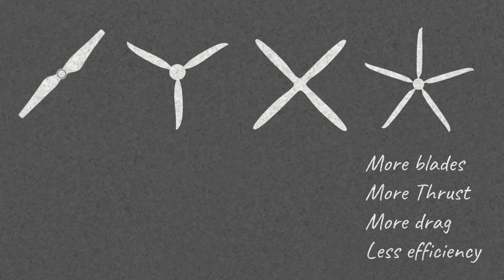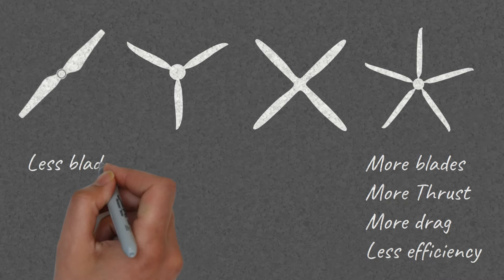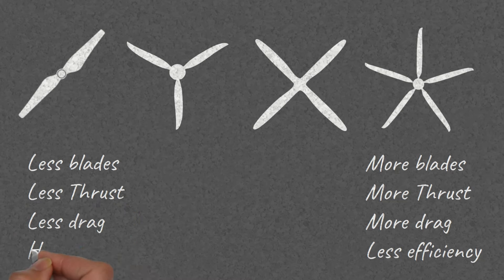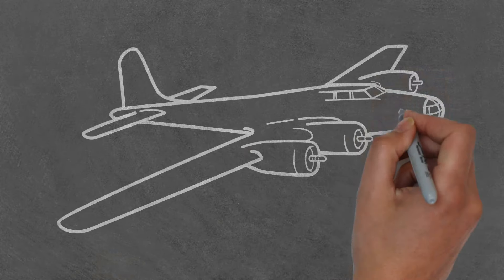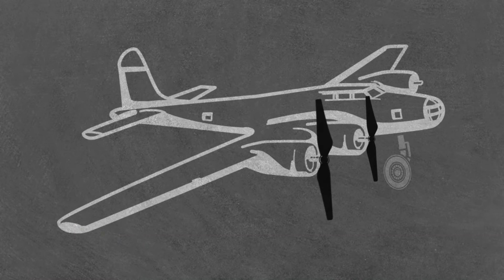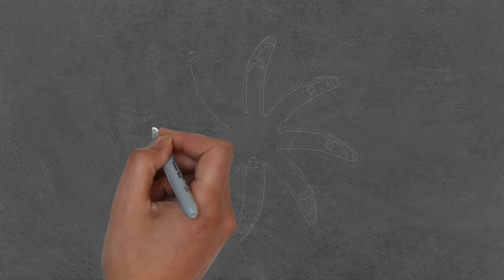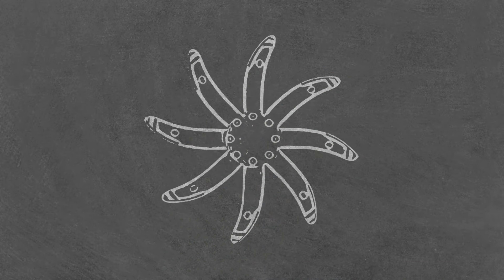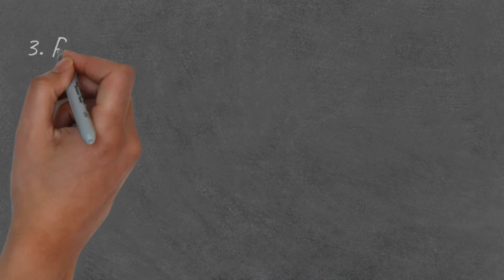In simple words: more blades equals more thrust with more drag, which reduces efficiency. Less blades equals less thrust with less drag, thereby increasing efficiency. Longer blades instead of more blades would be the ideal choice, but we are limited by both tip speed and landing gear length. Sometimes, because we are cramped for space or limited by weight, adding more blades is the only way forward.